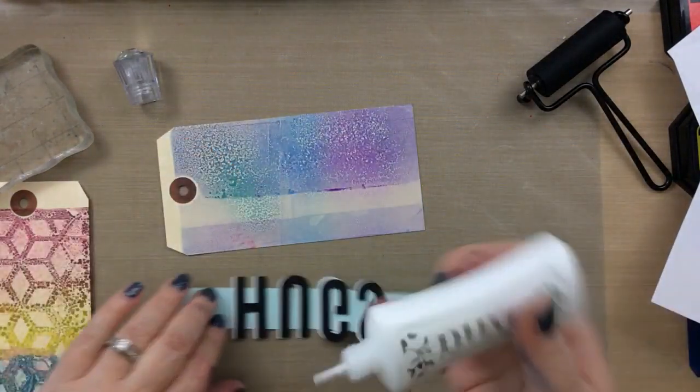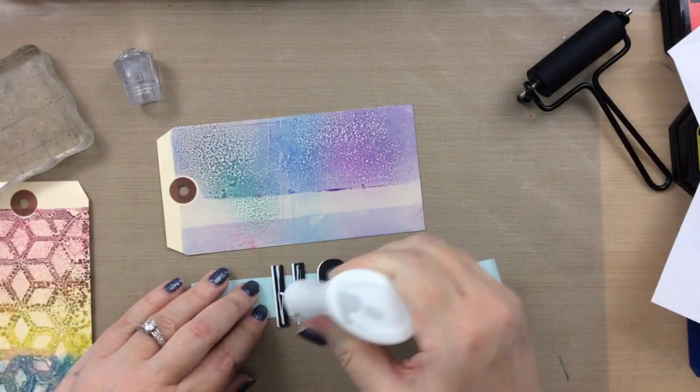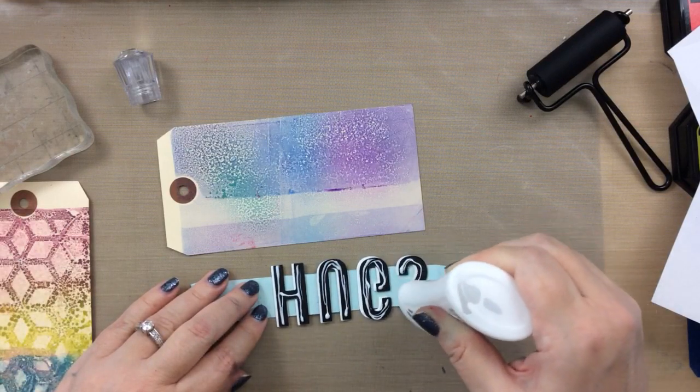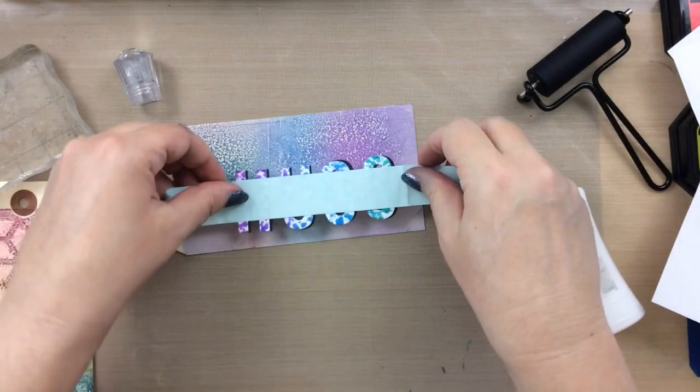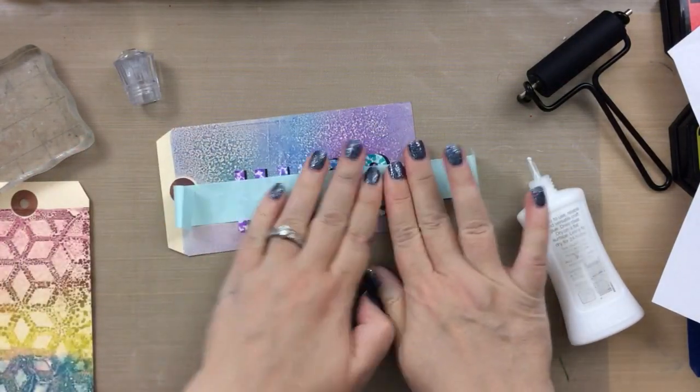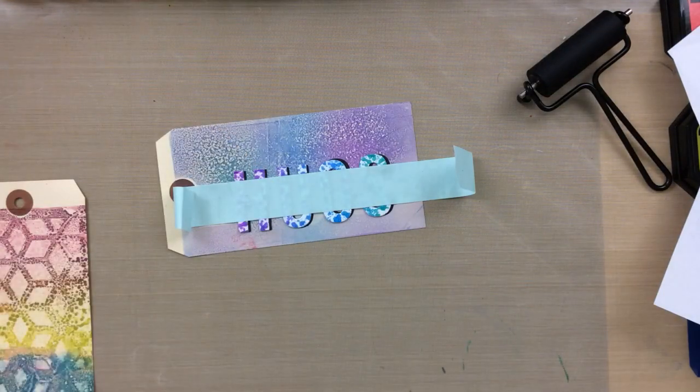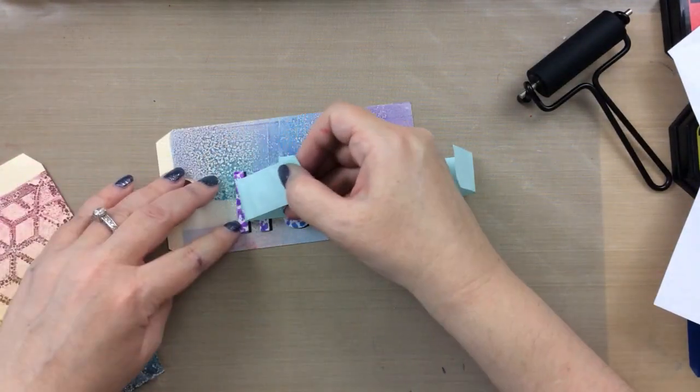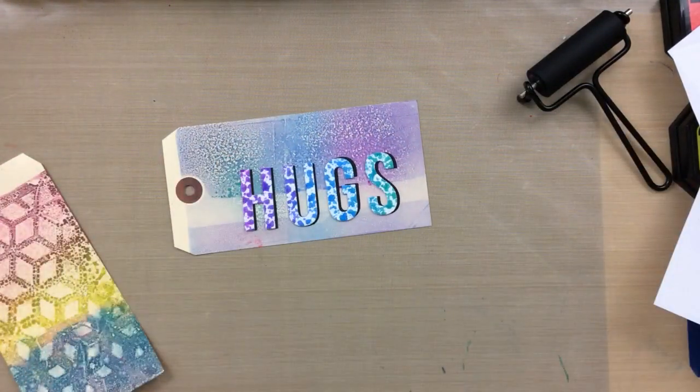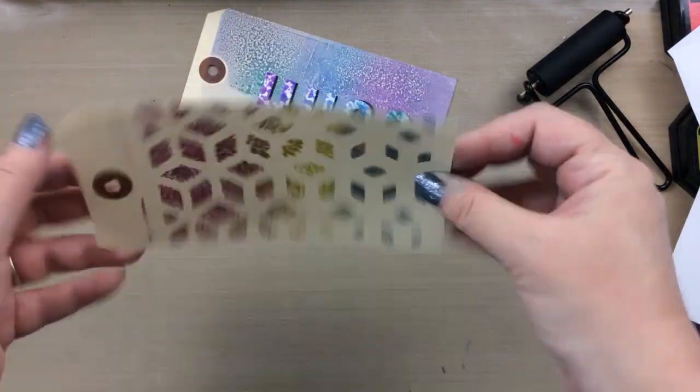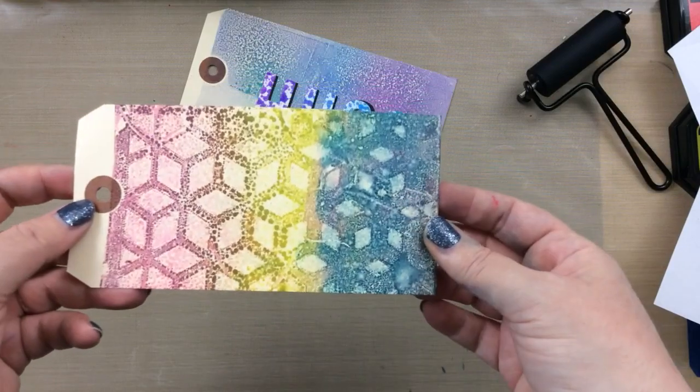I'm lining those letters up. I'm going to take some mint tape here and pick all of those letters up at the same time so that I can glue down that whole sentiment at once. And I'll just leave that on there to dry for just a minute before taking the tape off. And there you have your beautiful design.